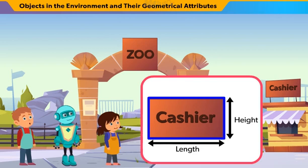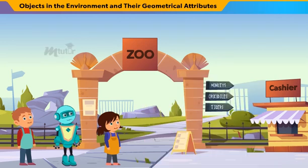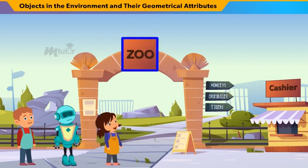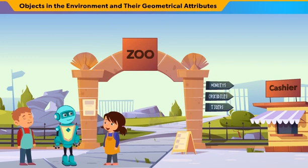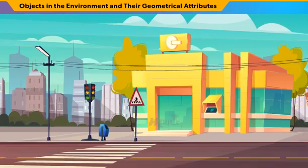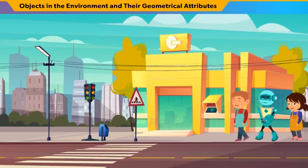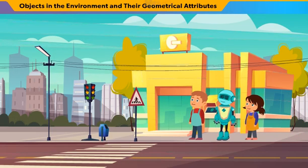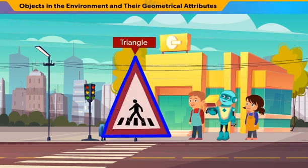So, what shape is this? It is a rectangle. If we draw this board shape, it is a square. Oh, we never knew this before, Webby. It's very interesting to learn new things. Webby, I wonder, what shape is this traffic signboard? This is a triangle.